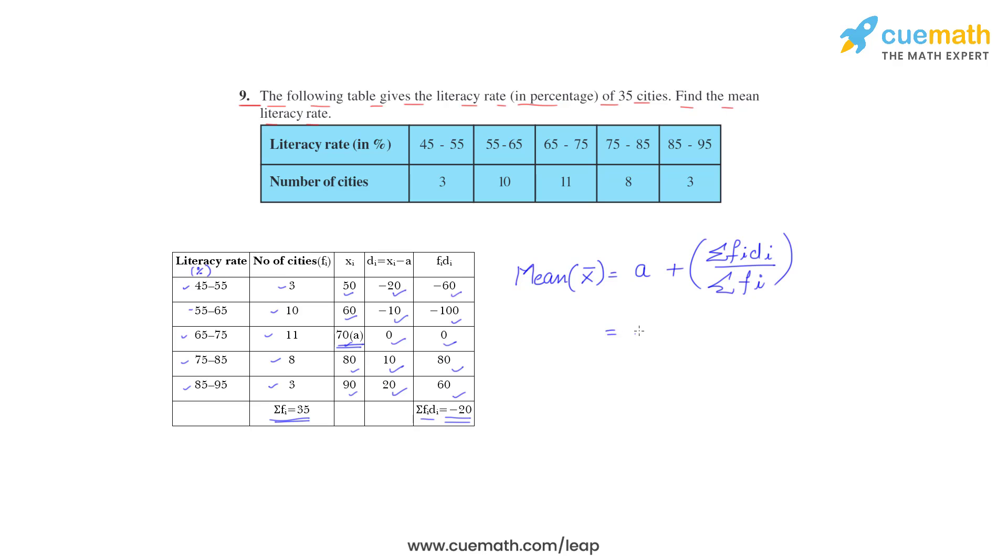So a is 70, plus Σfidi is minus 20, and Σfi is 35. So we get 70 minus 0.57, so it is equal to 69.43 percent. So the mean literacy rate is 69.43 percent.